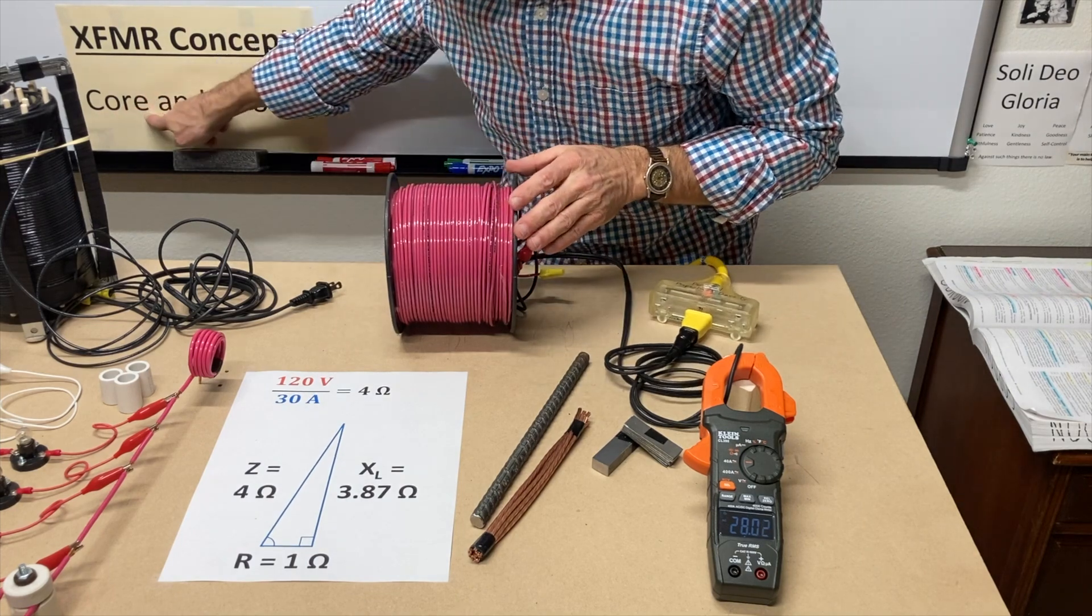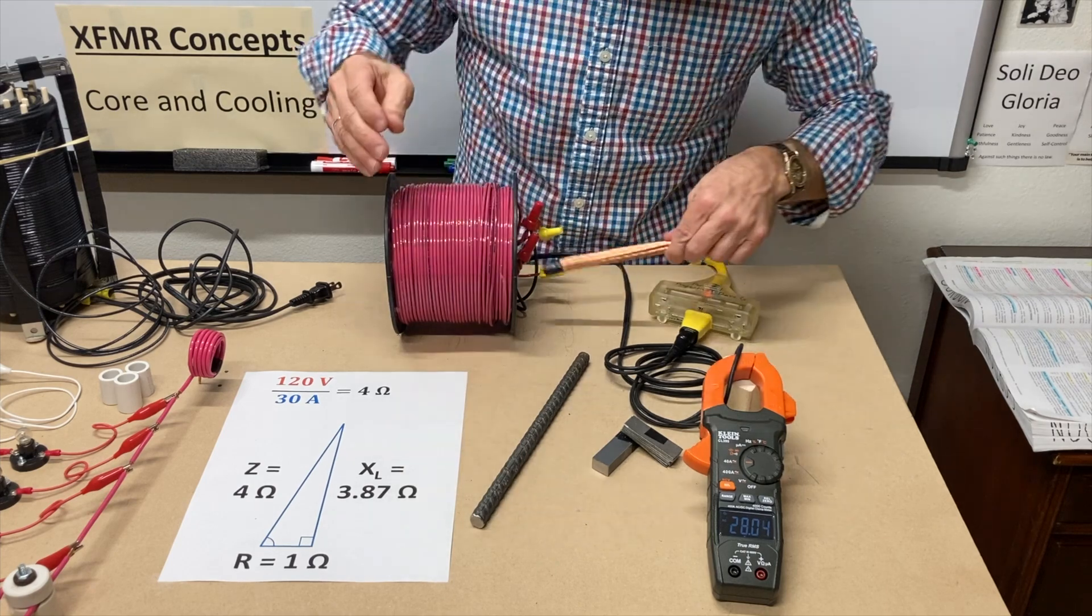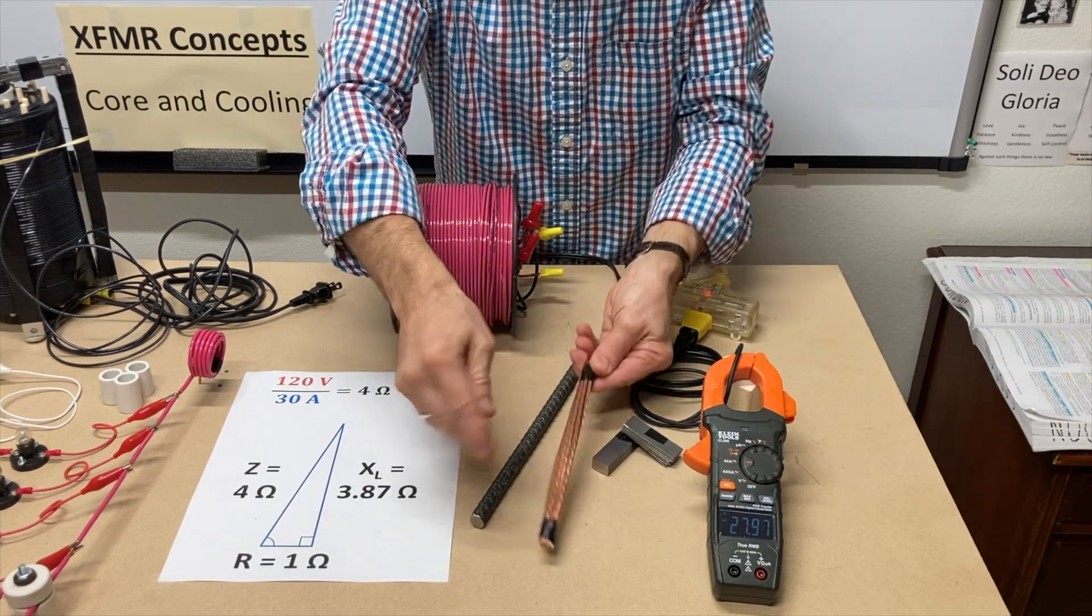And since this is partially about the core, let's put something in the middle. I got some copper wires here. Let's put that in. Nothing happens. It's not magnetic.